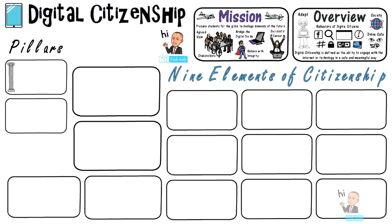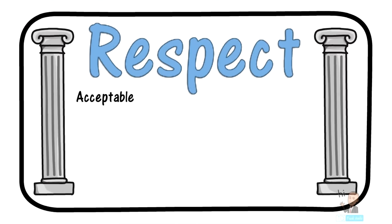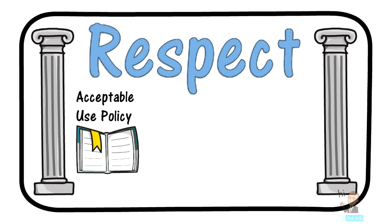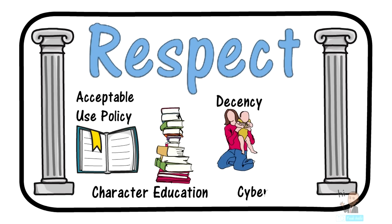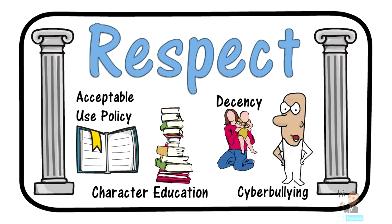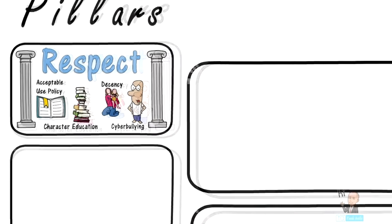We're going to move on to the two pillars of digital citizenship. The first pillar is respect. Schools have both students and staff sign an acceptable use policy — a set of rules and guidelines that restrict the way individuals are supposed to behave while using the school's internet services. Character education classes help instill the concept of respect for children. Because so much activity is transparent online, we need our students to behave in a decent manner. Many students become cyber bullies because of the online disinhibition effect, where it's easier to insult somebody from behind a computer screen as opposed to face to face.